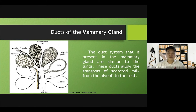The duct system that is present in the mammary gland is similar to the lungs. These ducts allow transport of secreted milk from the alveoli to the teats.